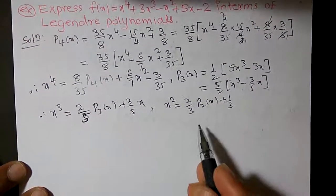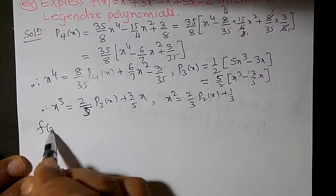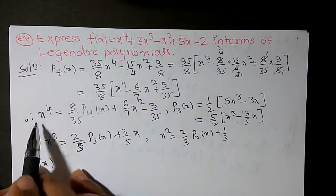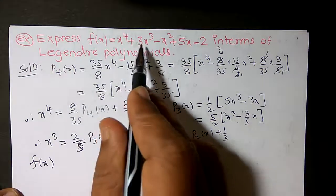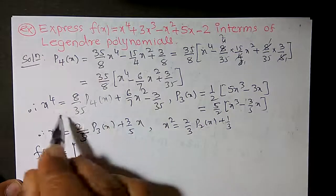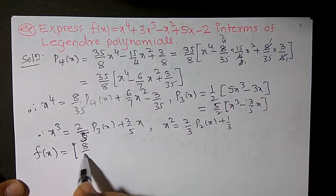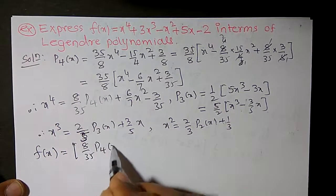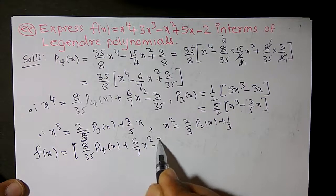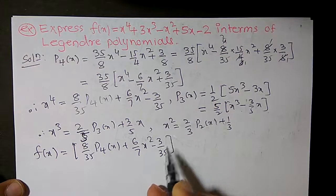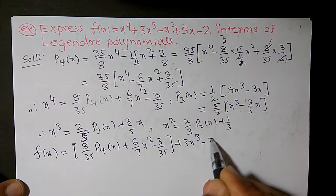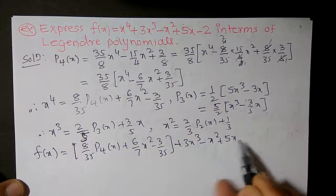Now f(x) is given as x⁴ + 3x³ - x² + 5x - 2. I want to substitute the value of x⁴ into this equation. So x⁴ = (8/35)P4(x) + (6/7)x² - 3/35. The other terms are + 3x³ - x² + 5x - 2.